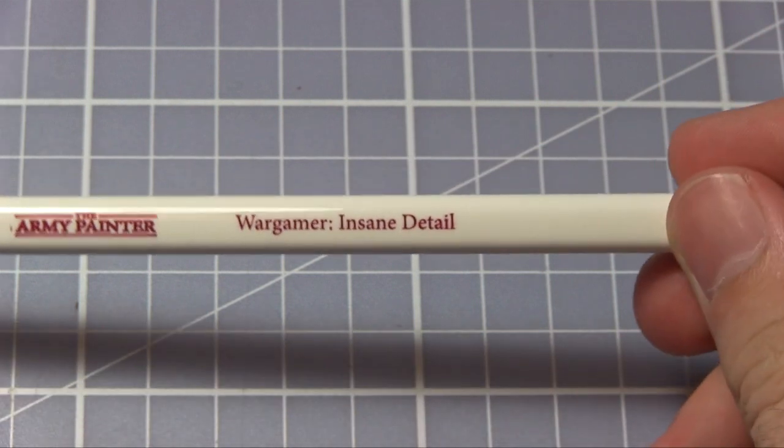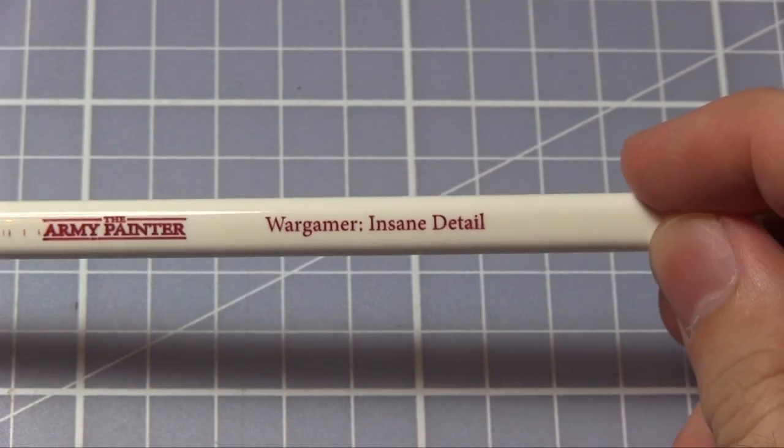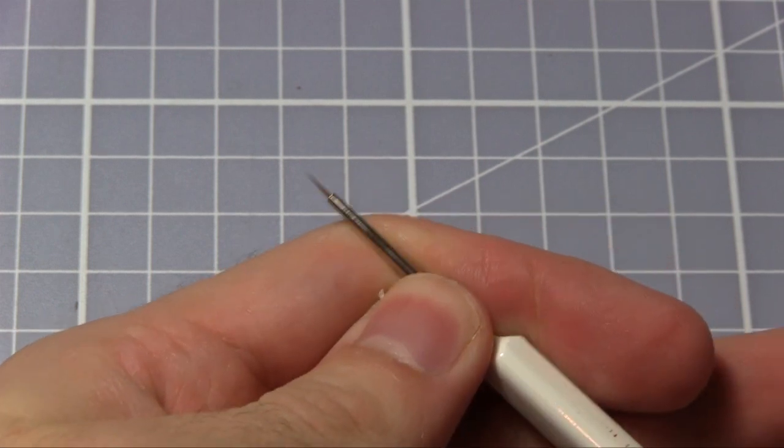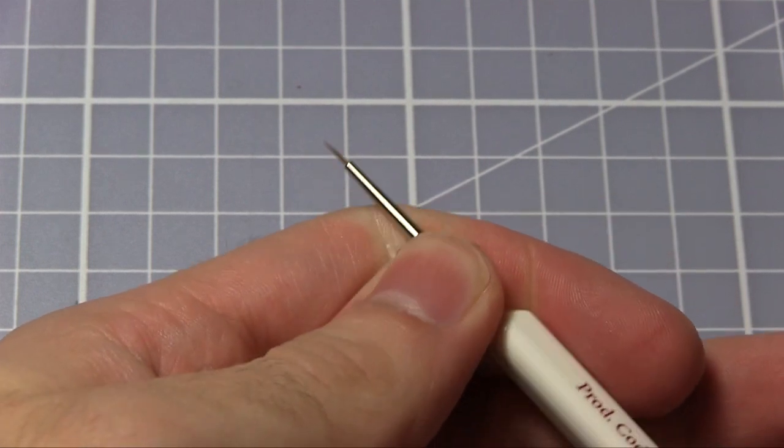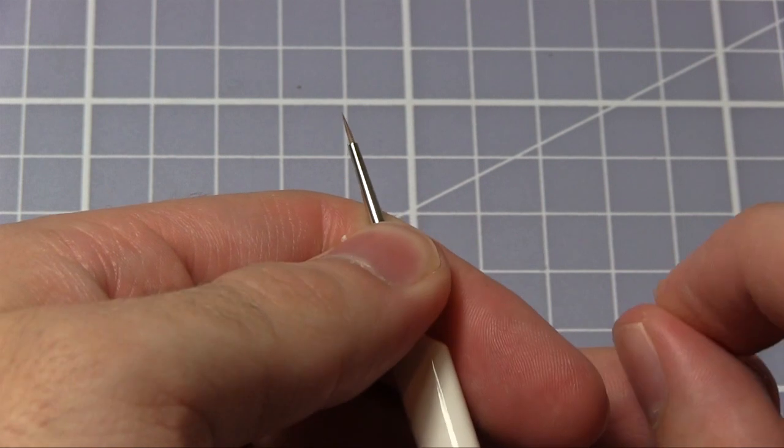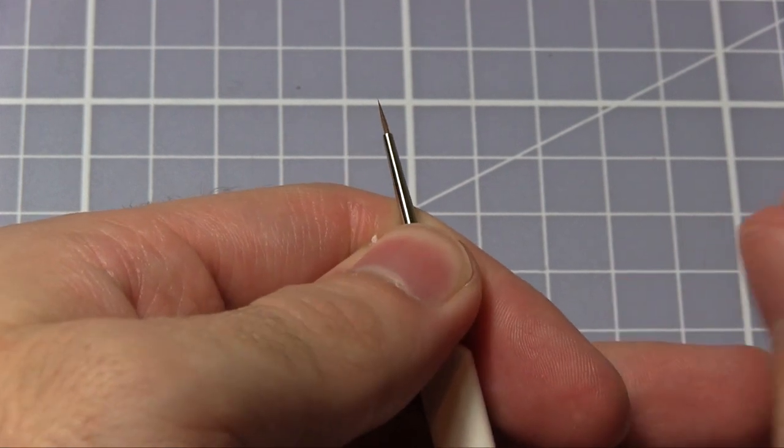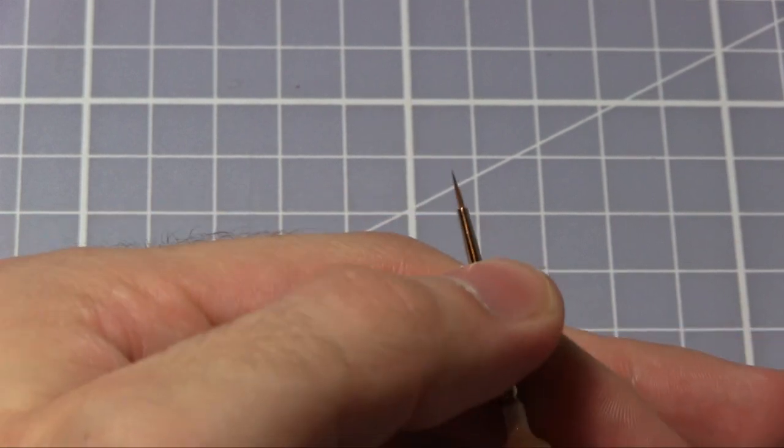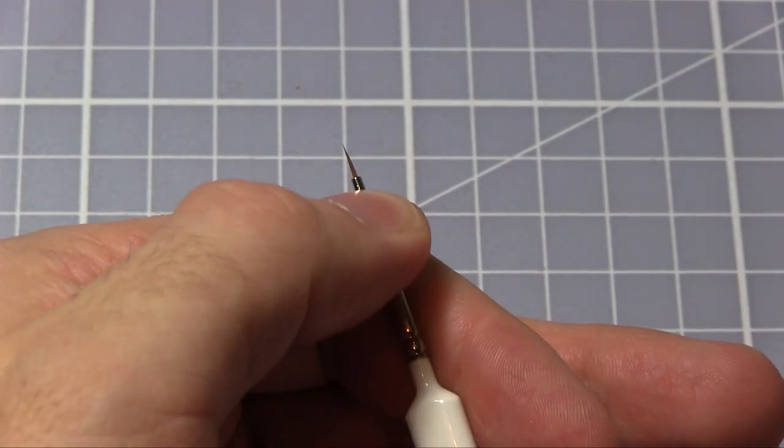This brings us to the insane detail brush. As you can probably imagine, if you are using this brush you are going to be doing things like highlighting teeth and fingernails and all those tiny little aspects of a model. If you're really keen on getting the best paint job, you want to make sure you pick them out and this is just fine enough to get all those details.